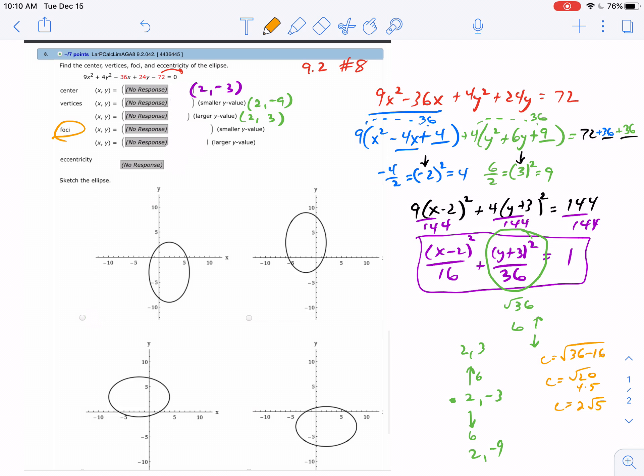Now, on WebAssign you can leave it as √20, but you're going to go up 2√5 and down 2√5. So you're going to add and subtract that to the center (2, −3).